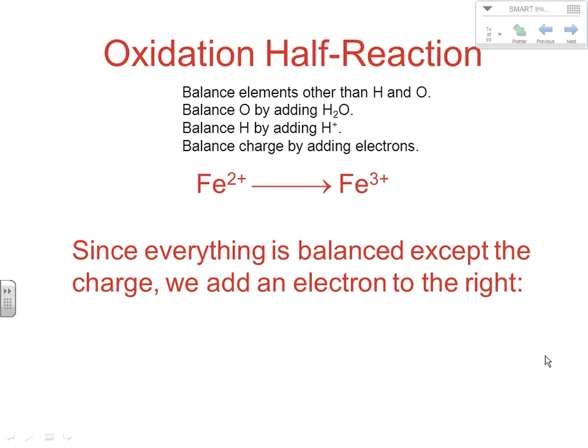Now we balance each half-reaction using the four steps. For the iron half-reaction, we first balance all elements besides H and O — we have one Fe on each side, so that's done. There are no O's or H's to balance, so all that's left is to balance the charge by adding electrons. We add one electron to the right side, giving us a positive 2 total charge on each side. You add electrons to the more positive side and add enough to bring the charges into balance.